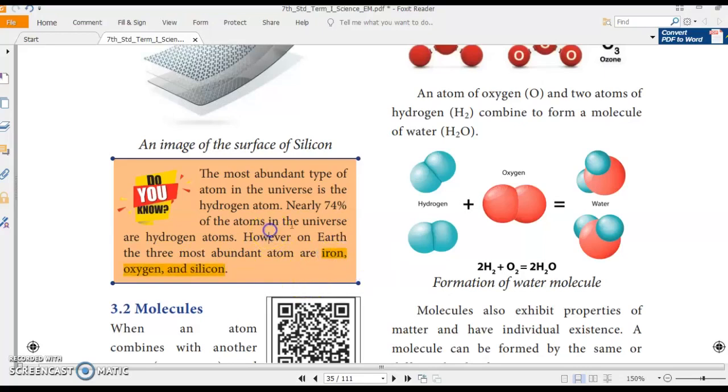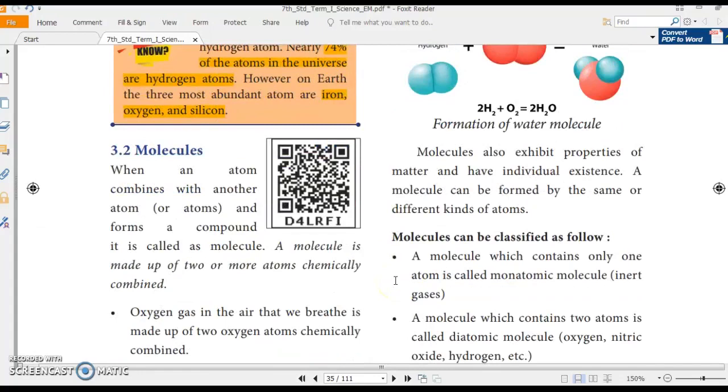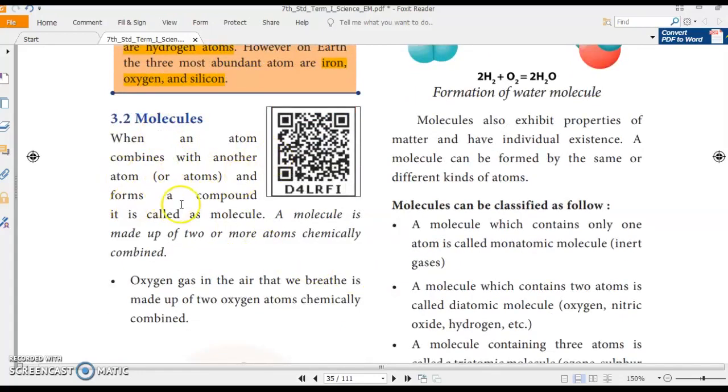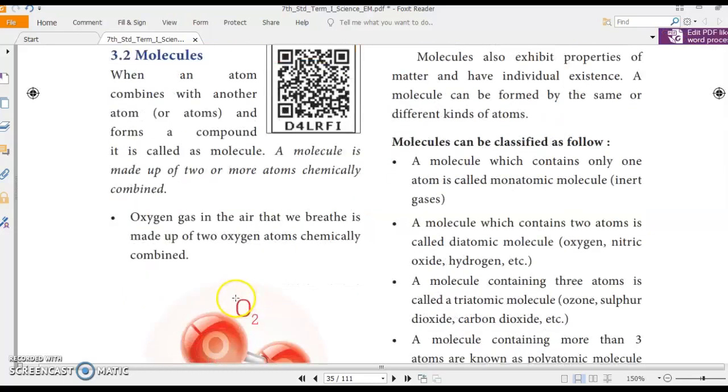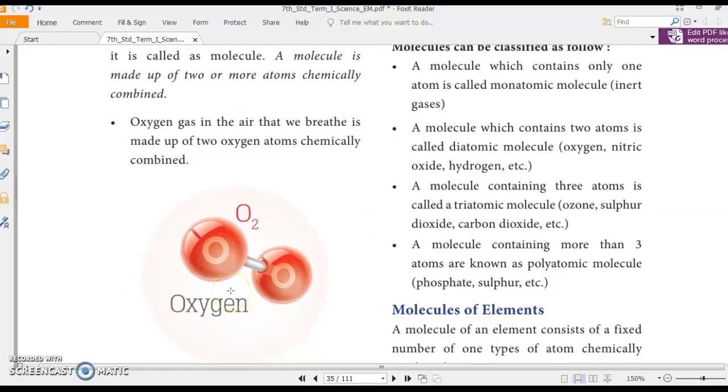Alright. Now, what do we get when we combine two or more atoms together? Do you have any idea? We get molecules when we combine two or more atoms together. So do you breathe? What a question, right? You breathe. I breathe. And all the living beings breathe. Right? What do we breathe in? We inhale oxygen. Did you ever think that one molecule of this oxygen has how many atoms in it? The one molecule of this oxygen that we breathe in is composed of two oxygen atoms, which is chemically combined. So one molecule of oxygen contains two oxygen atoms.